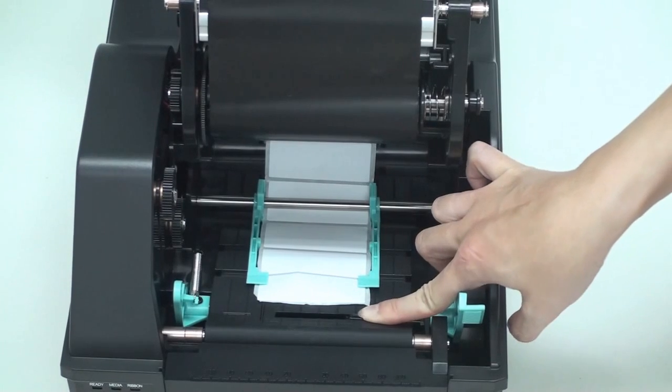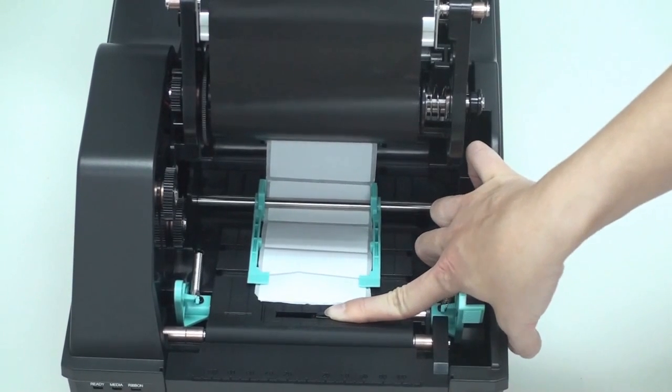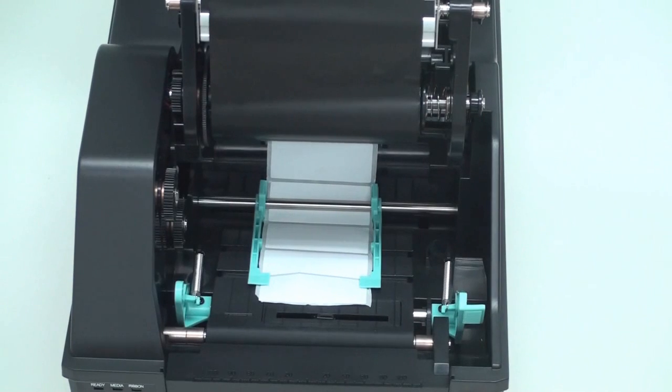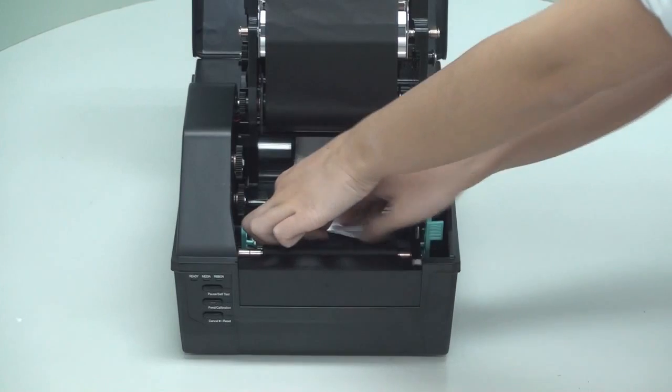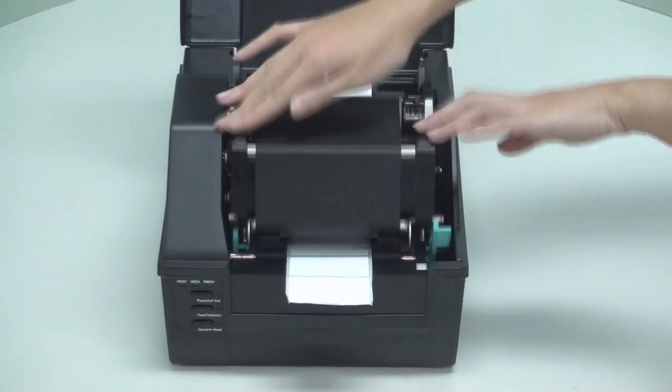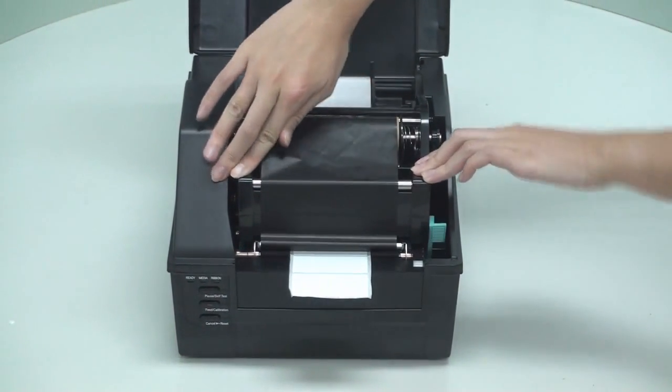Whenever you load a different size of label, make sure to adjust the media sensors positioned just below the labels. The media is now loaded. You can now push down the printhead module until you hear a click.